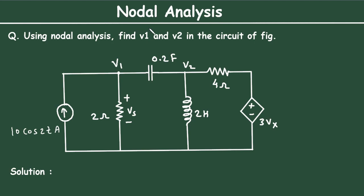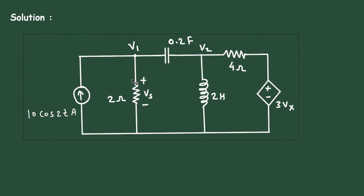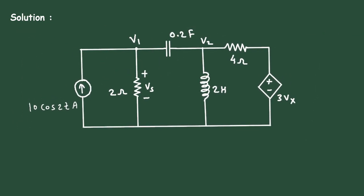Now here we can see nodal analysis. Using nodal analysis, find V1 and V2 in the circuit of the figure. In this circuit, we have to find V1 and V2 by using nodal analysis. The solution for this will be: first of all, we will convert this circuit from time domain to frequency domain.